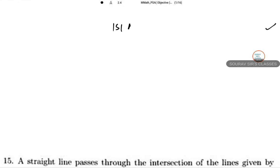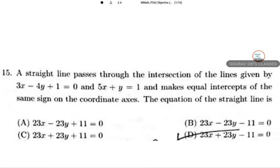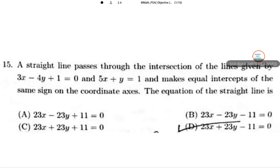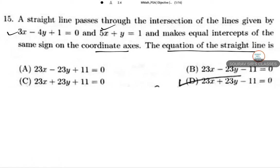Students, this is ISI M Math 2021 objective paper solution. Today we are solving question number 15 and 16 both. A straight line passes through the intersection of the lines given by these two equations and makes equal intercepts of the same sign on the coordinate axes. The equation of the straight line they have asked. Pretty direct question.